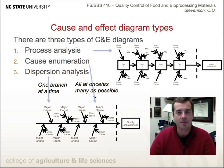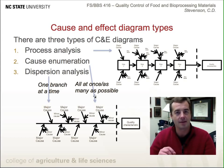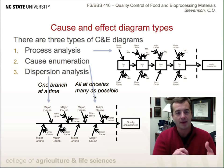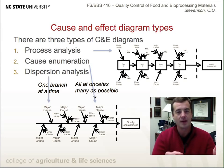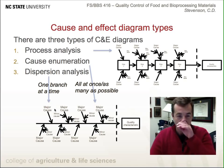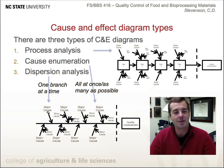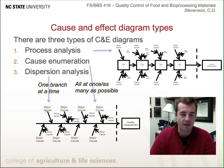The cause enumeration method uses a shotgun approach — you brainstorm as many causes as possible, then sort them on paper into major and minor causes and group them accordingly. The dispersion analysis approach looks at causes one by one. You might start by discussing people and process, identify the best heading for a major cause like training, and then identify minor causes such as bad training or low employee morale, depending on the setting.